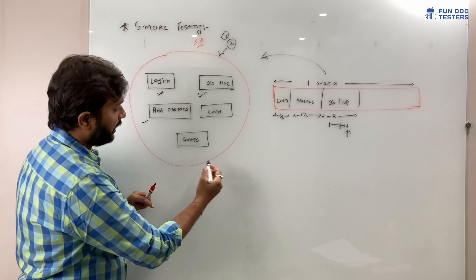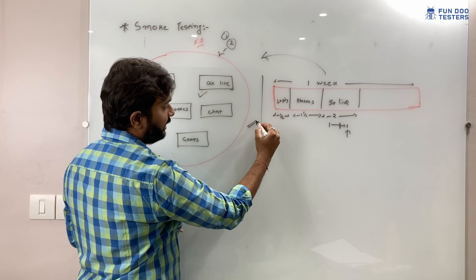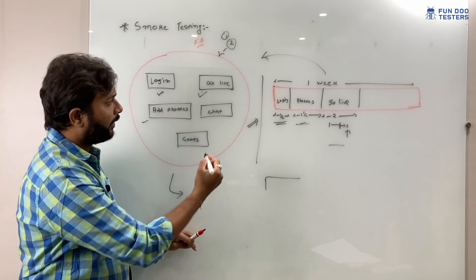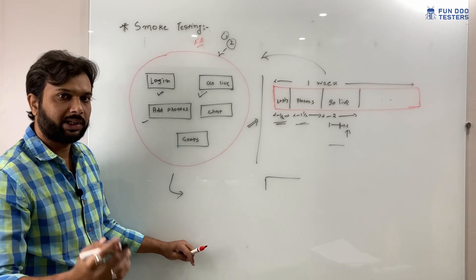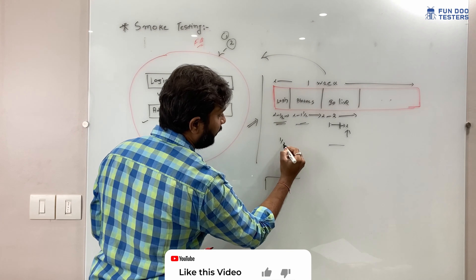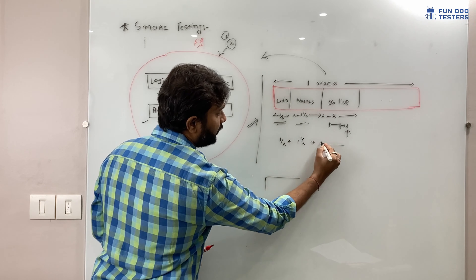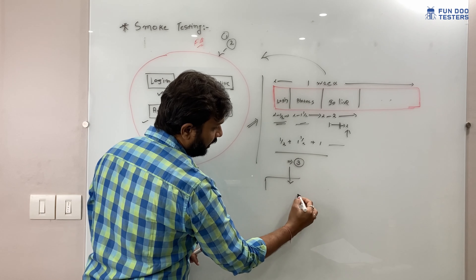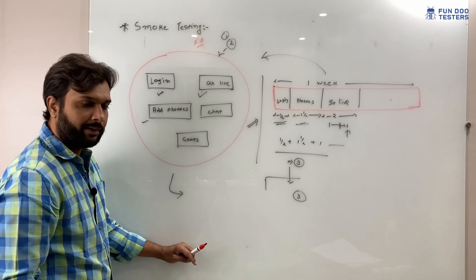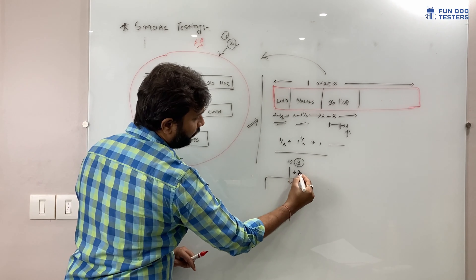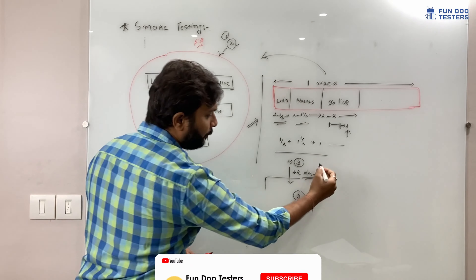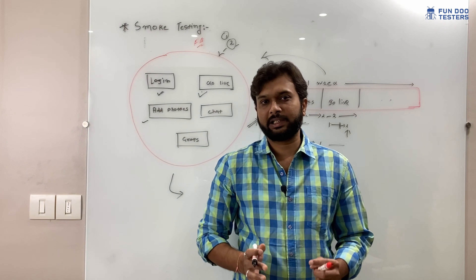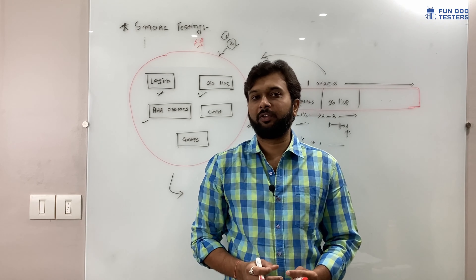We have to send the issue back to the development team, and they are going to take one to two more days to fix the bug. They fix the bug and share a new build, and again we have to start the full cycle — one and a half days for login, one and a half days for photos, two days for go live, and remaining time for groups and chat. In the previous cycle we spent almost three days, and in the next cycle we spend three more days, plus the developer consumed two extra days. We are spending five days doing repetitive work and wasting three critical business days.